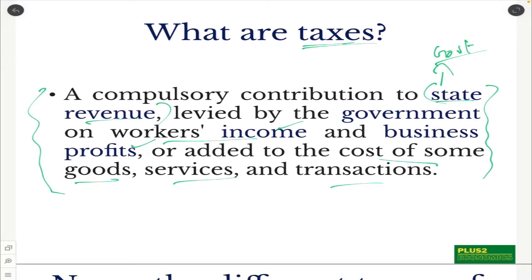For example, for the transactions that we make in the bank, we pay tax. For the goods and services that we purchase and use, we pay tax. For the incomes that we earn, we pay tax. For the profits that we make in the business, for that also we pay tax. So it is a compulsory contribution that we make towards the government, and that is called tax for us.